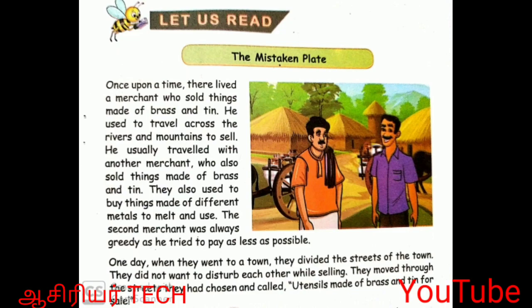Now I will read 'The Mistaken Plate'. Once upon a time, there lived a merchant who sold things made of brass and tin. He used to travel across the rivers and mountains to sell. He usually travelled with another merchant who also sold things made of brass and tin. They also used to buy things made of different metals to melt and use.